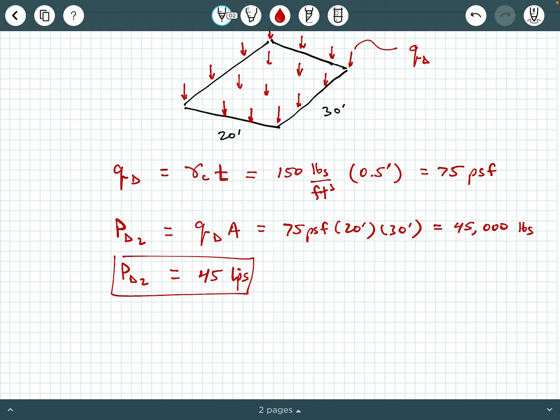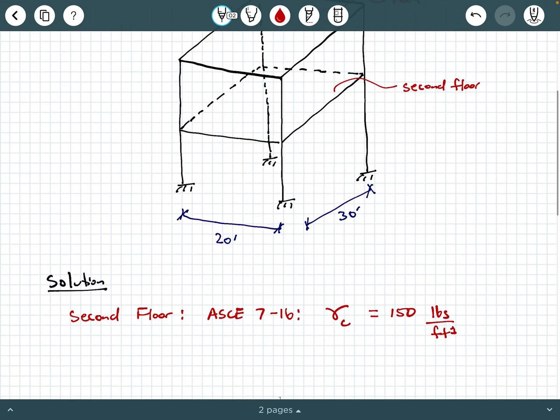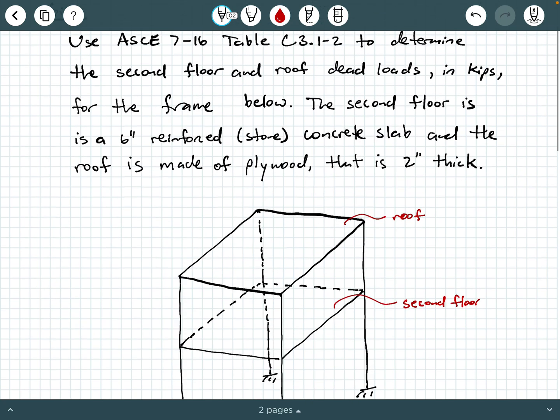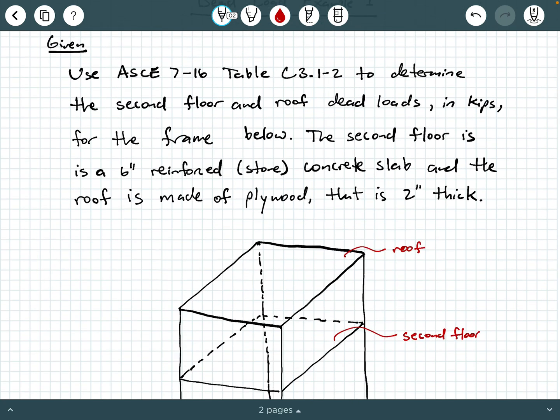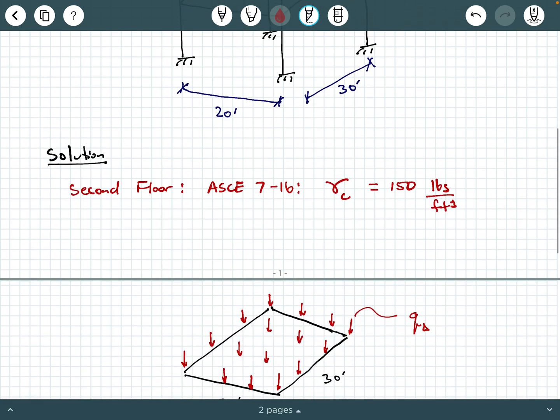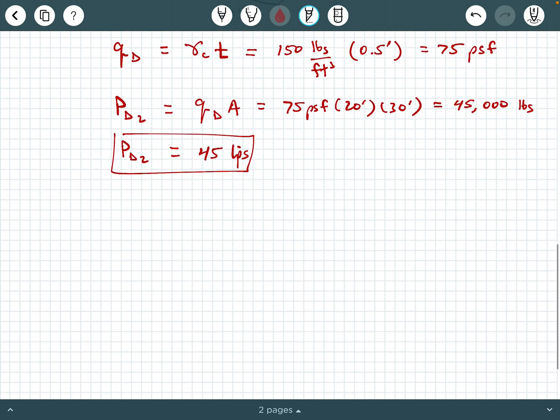Now, that's just the second floor. The problem also asked for us to determine the roof dead load in kips as well. So what's happening with this roof here? Well, we're going to follow the same process that we just did for the second floor, except we're going to do it for a roof now. So let's change colors and let's say roof.